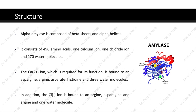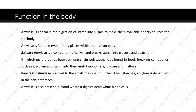Now let us see the functions of amylase in the body. Amylase is critical in the digestion of starch into sugars to make them available as energy sources for the body. Amylase is found in two primary places within the human body — salivary amylase and pancreatic amylase. Salivary amylase is a component of saliva and breaks down starch into glucose and dextrin, hydrolyzing the bonds between long-chain polysaccharides and breaking compounds such as glycogen and starch into their useful monomers, glucose and maltose. Pancreatic amylase is added to the small intestine to further digest starches. Amylase is denatured in the acidic stomach, and is also present in blood where it digests dead white blood cells.